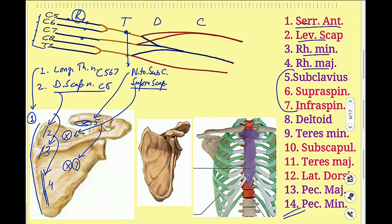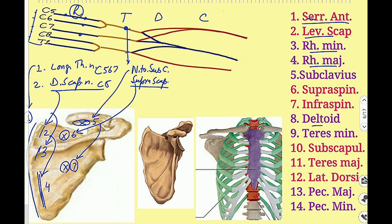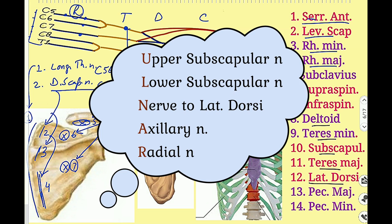The next muscles in sequence are supplied by branches of the posterior cord of the Brachial Plexus: deltoid, teres minor, subscapularis, teres major, and latissimus dorsi. For these we use the mnemonic ULNAR — U for upper subscapular nerve, L for lower subscapular nerve, N for nerve to latissimus dorsi, A for axillary nerve, and R for radial nerve. These five branches supply the remaining five muscles.